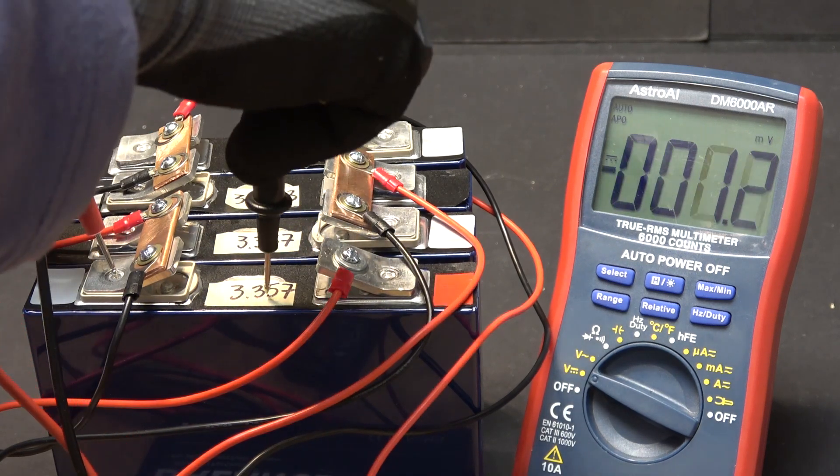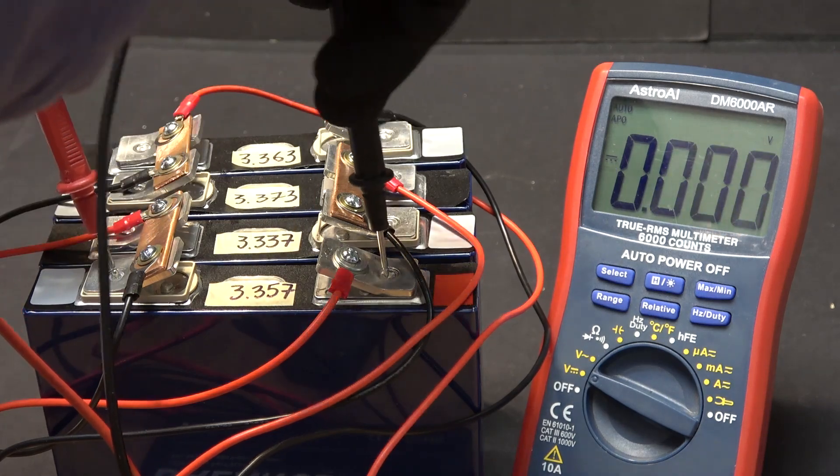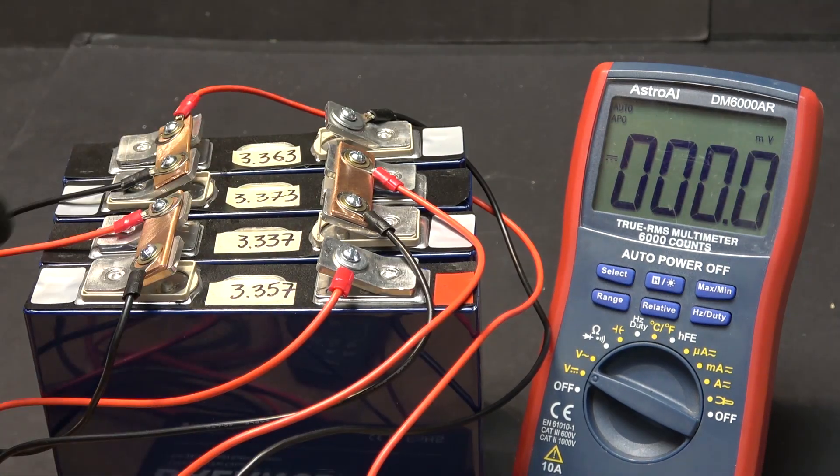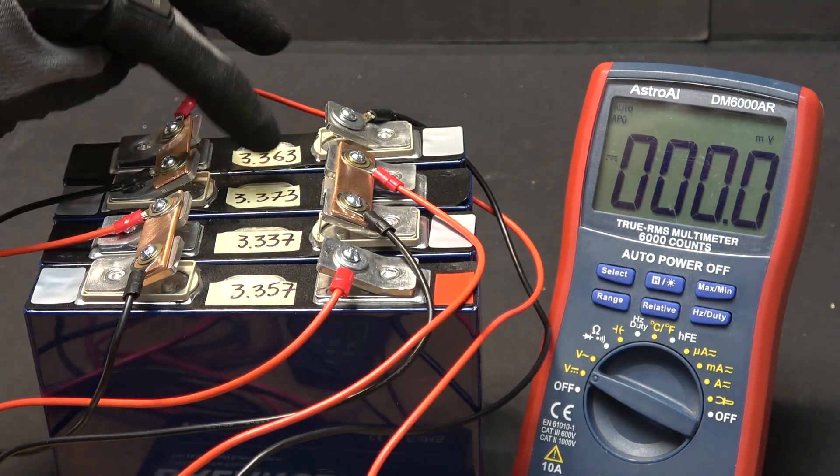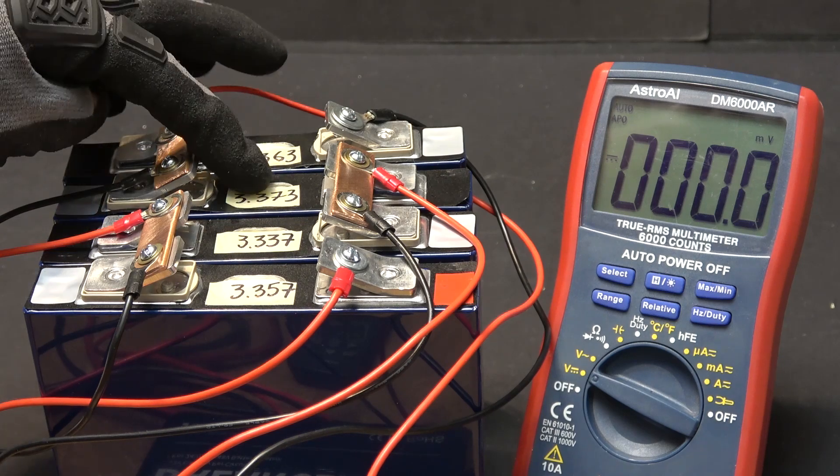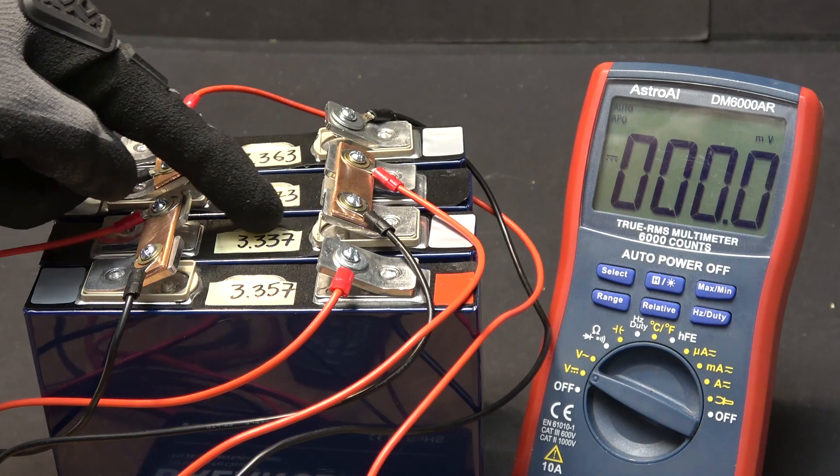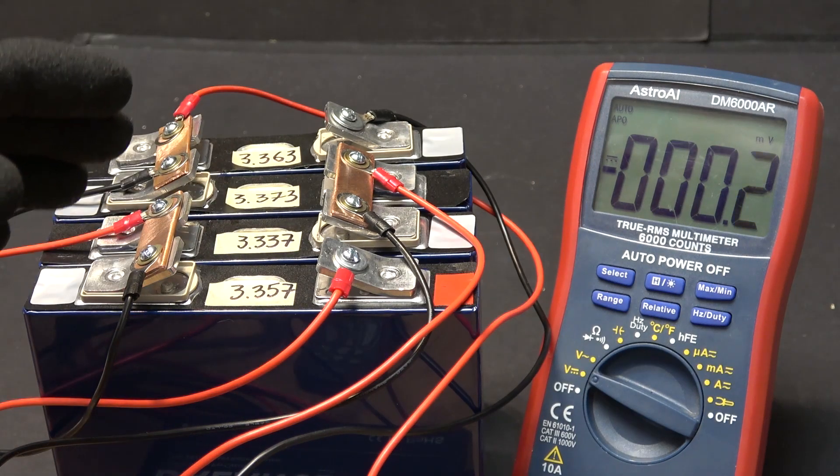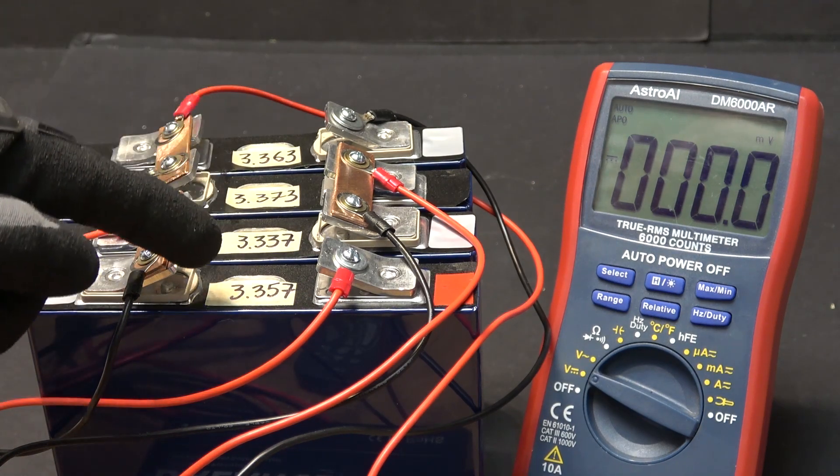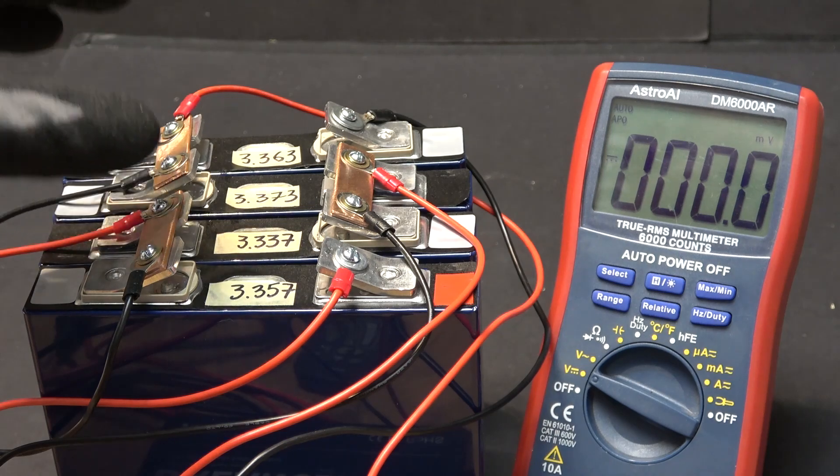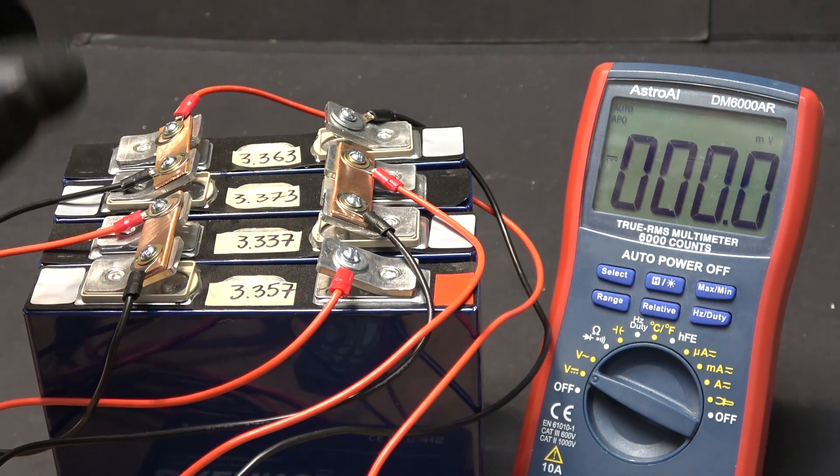So what it's been doing is taking the power from the higher voltage cells, which is this one, this one, and this one, and charging the cell that's got a lower voltage. But after eight and a half hours, the voltages aren't completely 100% matching yet. I'm going to let it run overnight and I'll come back in the morning and check it again.